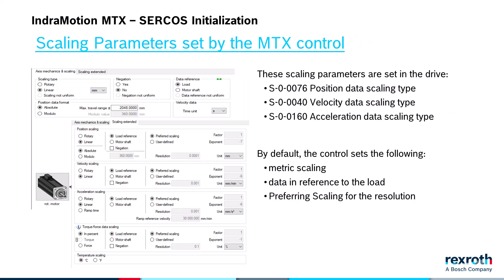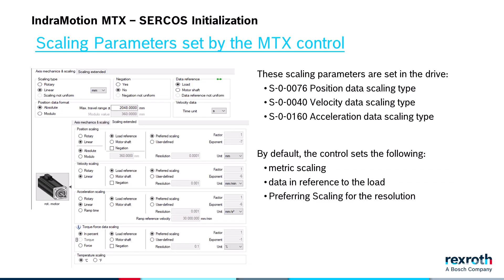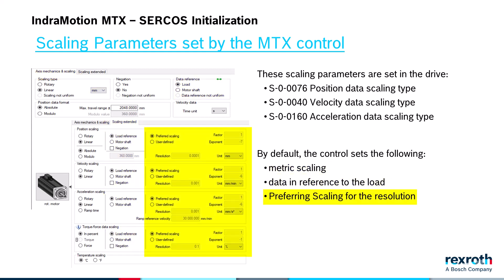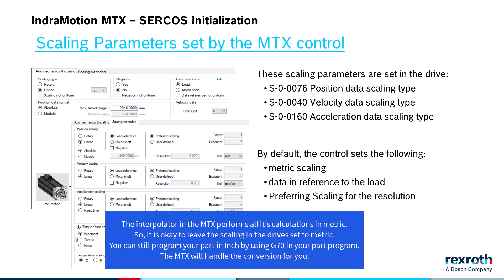The next group of parameters set by the control are the scaling parameters. The access type parameter and the enable module calculation parameter are used to set these drive parameters. By default, the MTX will set the parameters in the drive for metric scaling, data and reference to the load, and preferred scaling for the resolution. If you want to use a different resolution like 1 nanometer, then you will need to use an STS file to write a different value to the drive. The interpolator in the MTX performs all its calculations in metric, so we set the scaling in the drives in metric. You can still program your part in inch by using G70 in your part program; the MTX will handle the conversion for you.